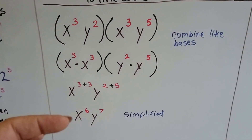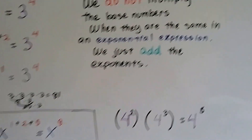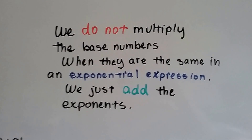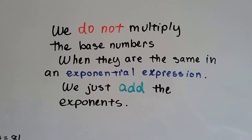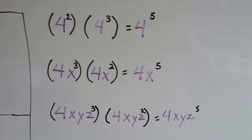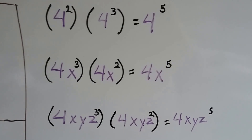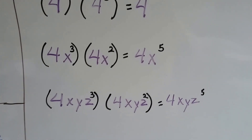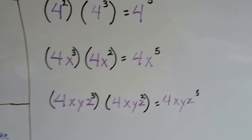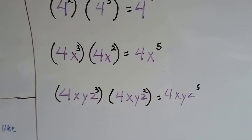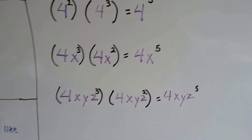When it's all simplified, this is how it looks. We do not multiply the base numbers when they are written in exponential form — we just add the exponents. So if the bases are the same, just add the exponents. For example, 4 to the second power times 4 to the third power: just combine and add the exponents — 2 plus 3 is 5, giving 4 to the fifth. Even with a variable, 4x to the third times 4x to the second gives 4x to the fifth. And with multiple variables, 4xyz to the third times 4xyz to the second gives 4xyz to the fifth.